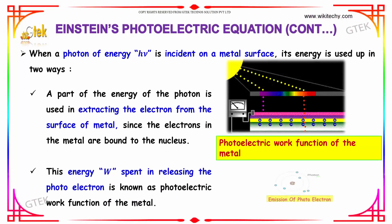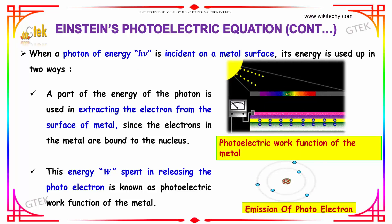When a photon of energy is incident on a metal surface, it is used up in two ways. A part of the energy in this photon is used in extracting the electrons from the surface of a metal. Since the electrons in the metal are bound to the nucleus, the energy W spent in releasing the photoelectron is referred to as the photoelectric work function of the metal.